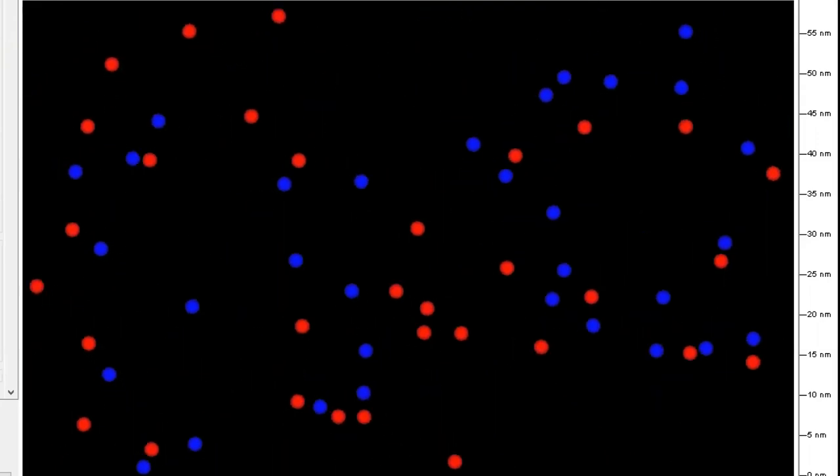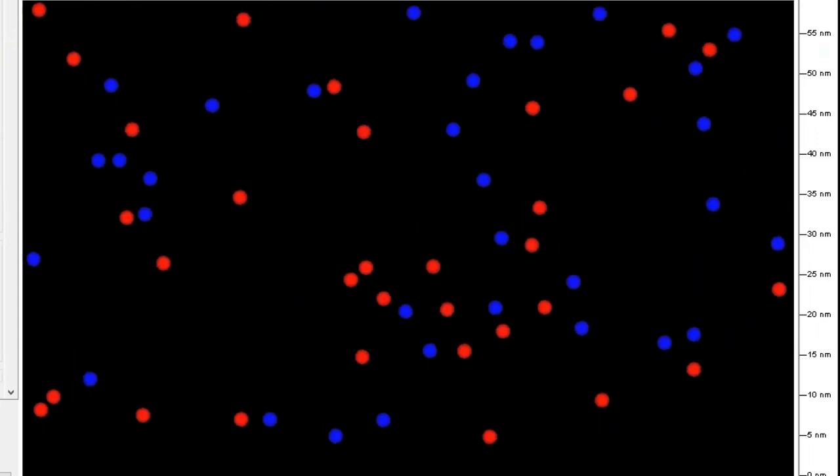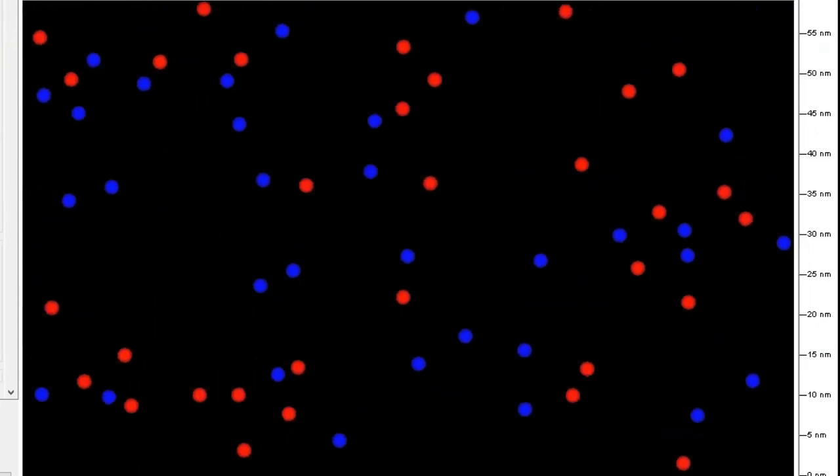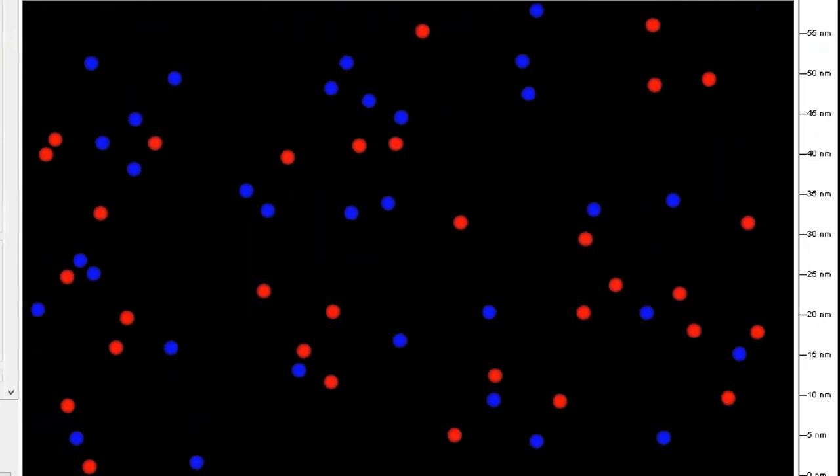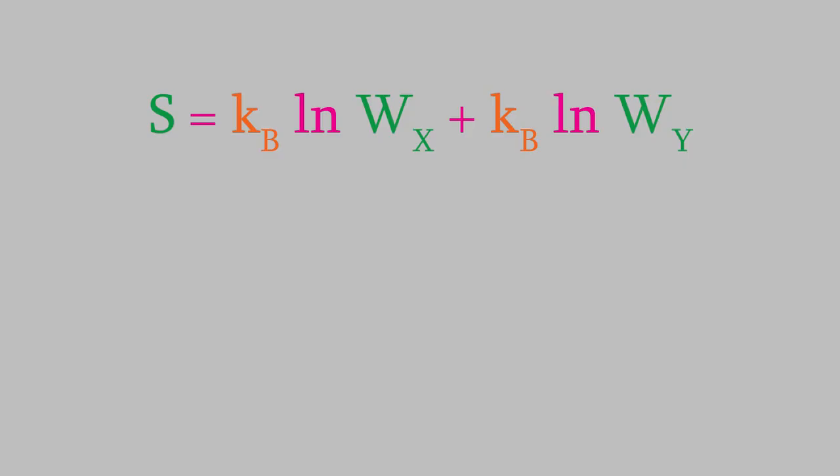The overall entropy is just equal to the entropy of the molecules in part x, plus the entropy of the molecules in part y. Using Boltzmann's definition of entropy, we can rewrite the equation this way. Let's simplify this a bit by factoring out kB.